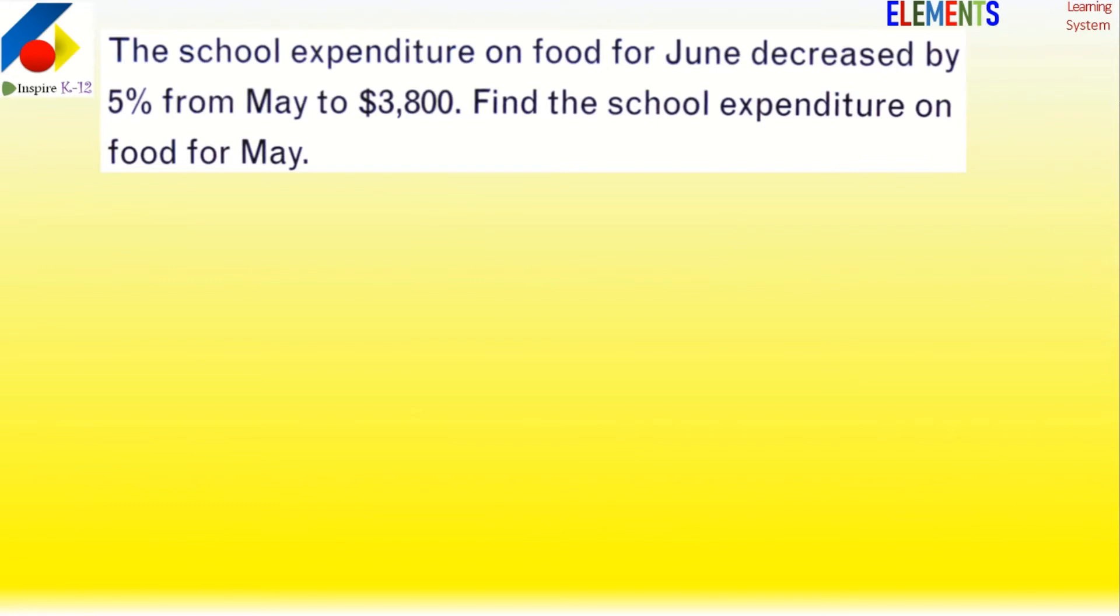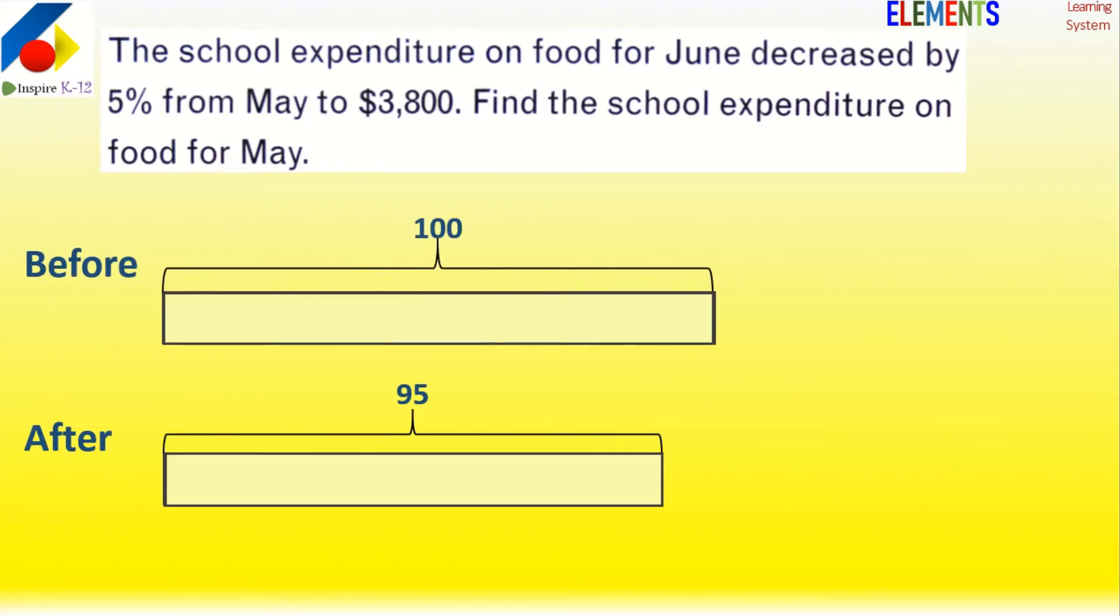...decreased 5% from May to $3,800. Find the school expenditure on food for May. So before was 100, after is 95, and the difference is 5%. What happened in May: 95%...